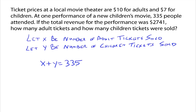Now we bring in the dollar amount. This first equation is the total number amount, and the second equation is going to involve the money. We know if it's $10 for adults and $7 for children, then we've got 10X — that's the total amount of money brought in for the number of adults — plus 7Y, the total amount of money from children's tickets. And we know the total revenue for the performance was $2,741.